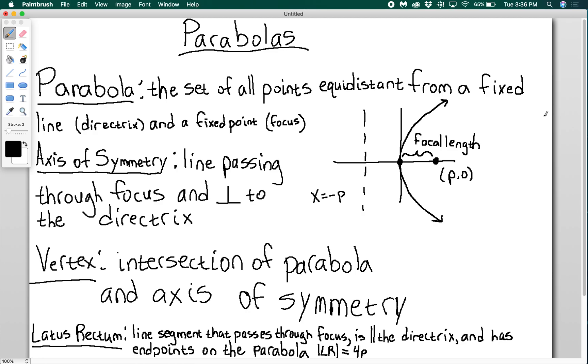A parabola is the set of all points that is equidistant from a fixed line called the directrix and a fixed point called the focus. You can see on this little diagram I've sketched the fixed line as a dotted line, x equals negative p, the parabola in a solid black line, and then the focus is a point p0 on the x-axis. The distance between the vertex and the focus is called the focal length, and that focal length is equal to p.